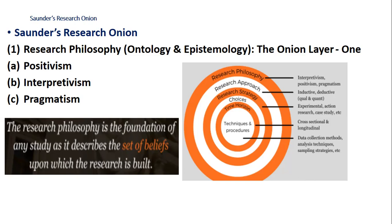The very first layer of the onion is the research philosophy, which is the foundation for any study. It describes the set of beliefs that we have. The research philosophy can be described as ontology or epistemology. In simple terms, ontology is the 'what and how' of what we know — in other words, what is the nature of reality and what are we really able to know and understand?